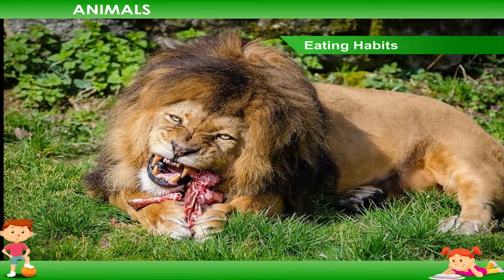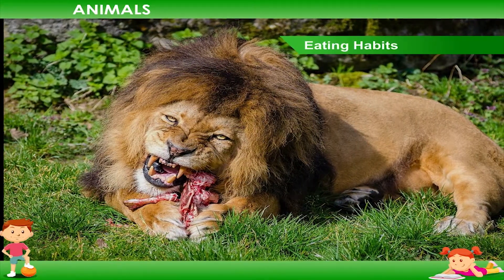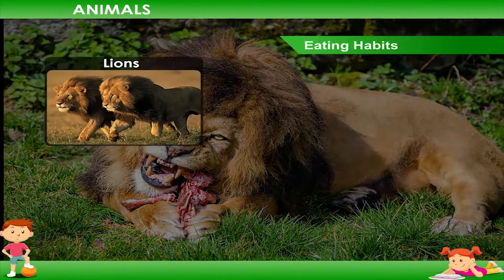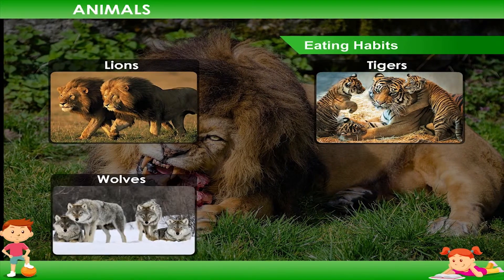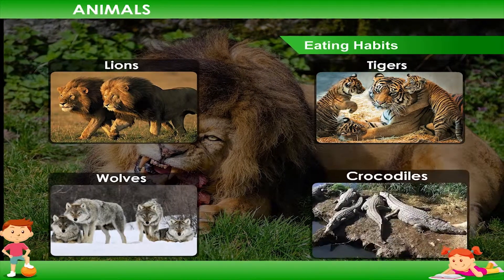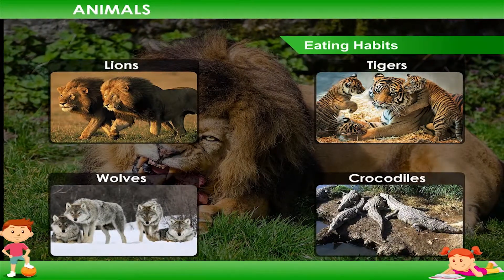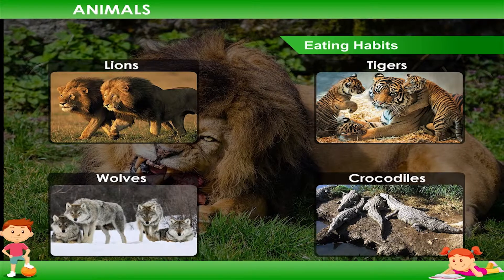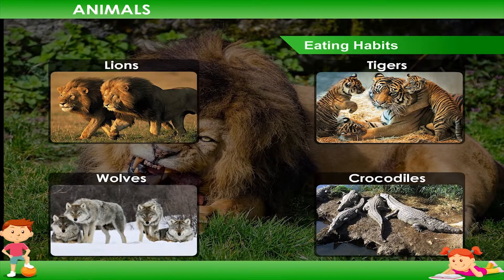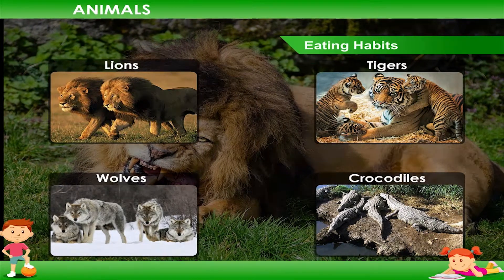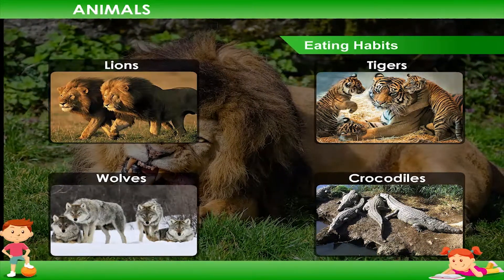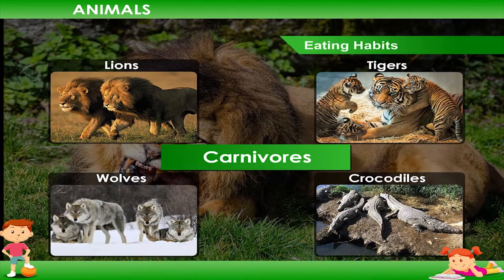Eating Habits. Some animals such as lions, tigers, wolves, crocodiles etc. hunt other animals and eat their flesh. These are called carnivores.